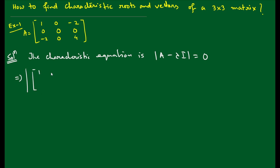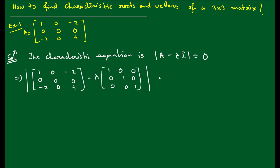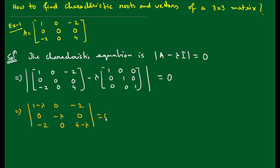So this implies we compute the determinant. The matrix A is given as: row 1: 1, 0, −2; row 2: 0, 0, 0; row 3: −2, 0, 4. We subtract λI, where for a 3×3 matrix I is the identity with 1s on the diagonal. So we get the determinant of (A − λI) equals zero.